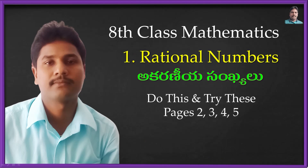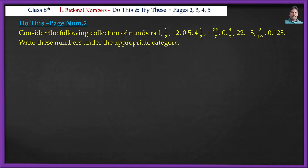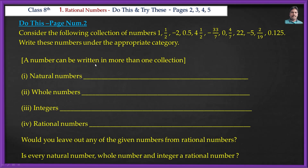Do this and try this, on page numbers 2, 3, 4 and 5. Consider the following collection of numbers: 1, 1/2, -2, 0.5, 4, 1/2, -33/7, 0, 4/7, 22, -5, 2/19, 0.125. Write these numbers under the appropriate category. A number can be written in more than one collection. The categories are: Natural Numbers, Whole Numbers, Integer, Rational Numbers.